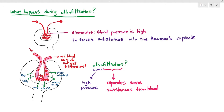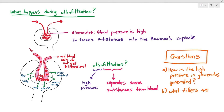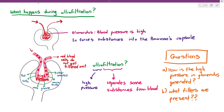There are two very important questions we have to talk about when covering ultrafiltration. The first is: how is the high pressure in the glomerulus generated? And the second question is: what filters are present between the glomerulus and the Bowman's capsule, which prevent everything from being forced outwards? This is what is important for you to know for A-levels.